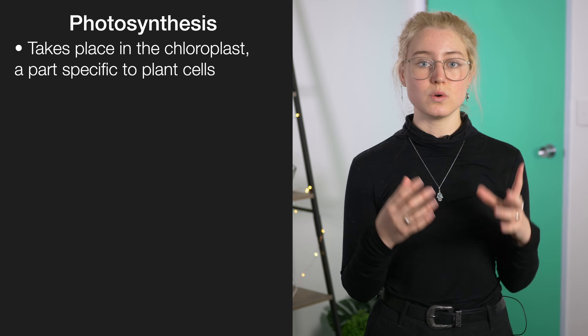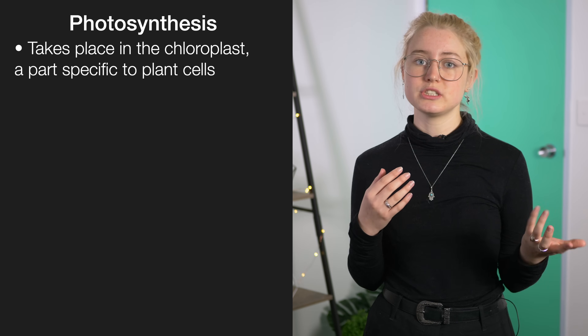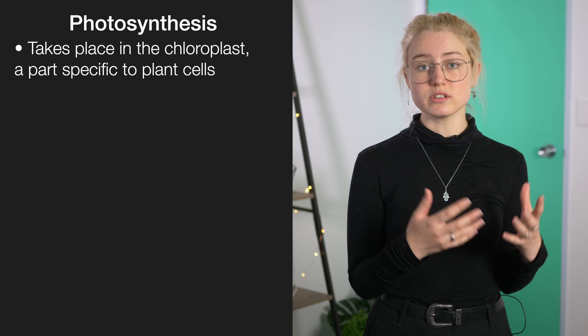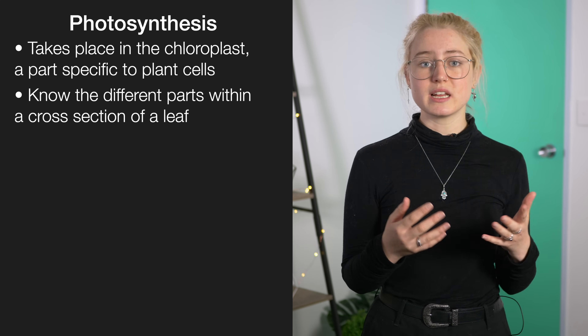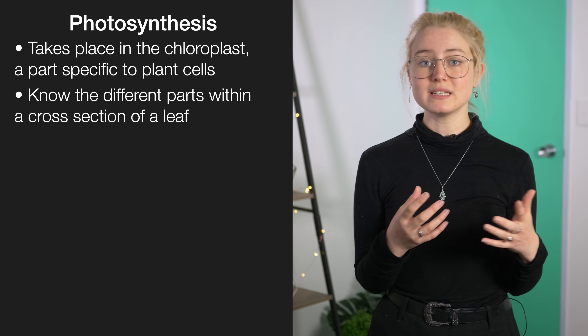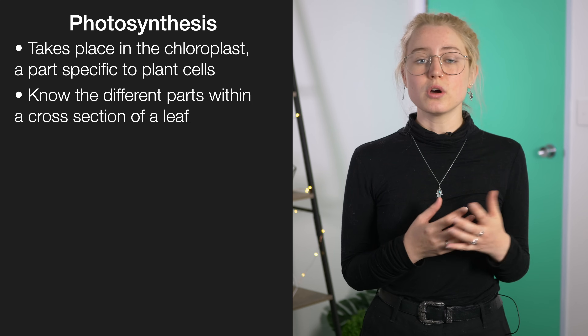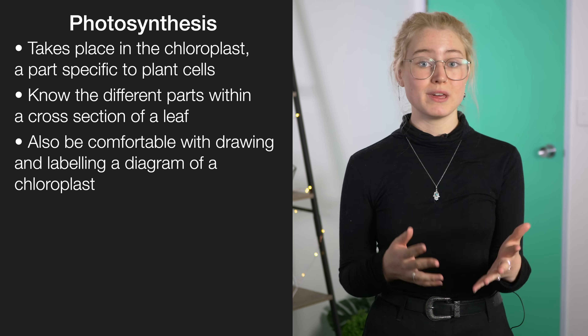Starting with photosynthesis — bear in mind this only happens in plant cells and specifically in chloroplasts, which is an organelle unique to plant cells. Understanding how cells absorb sunlight, it can be really handy to know a cross-section of a leaf and the different layers within it. In particular, you'd want to discuss the palisade layer, which has a lot of cells with a high amount of chloroplasts. A common question can also be either labeling or creating your own diagram of a chloroplast.